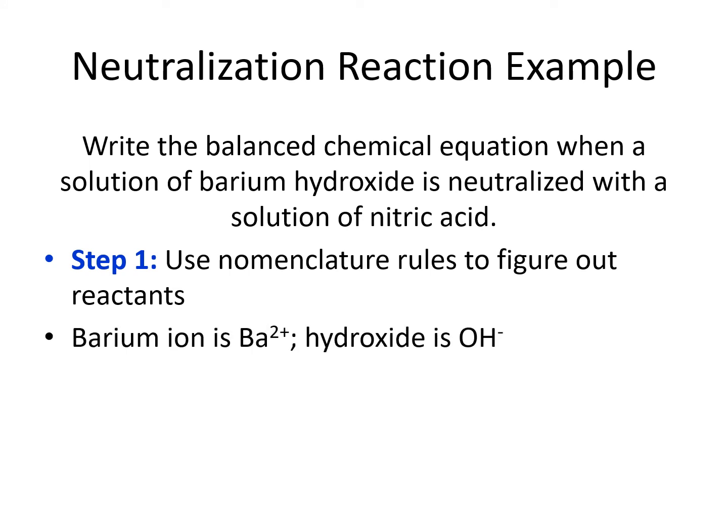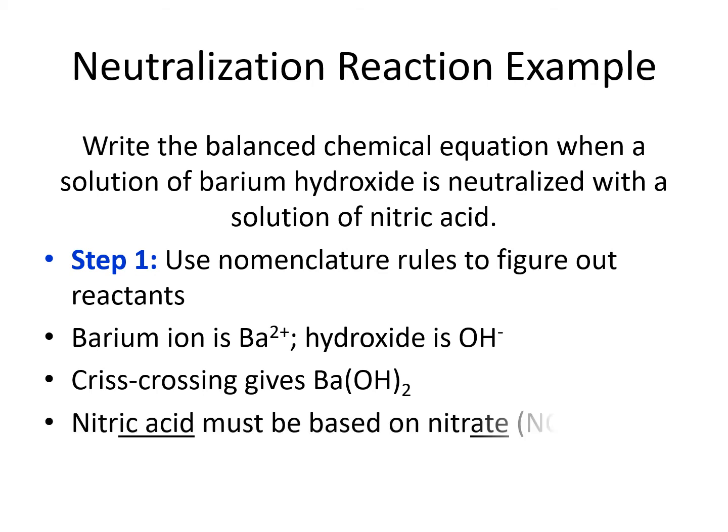Barium is Ba²⁺ and hydroxide is OH⁻¹. We need to crisscross to make it an electronically neutral formula — when we crisscross, we get Ba(OH)₂. The other reactant is nitric acid. Since it has an -ic acid ending and there's no hydro in the front, we know it's based on a polyatomic ion that ends in -ate.